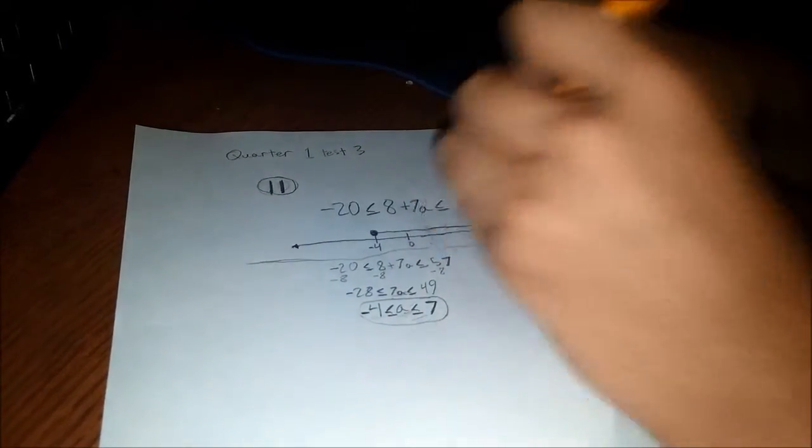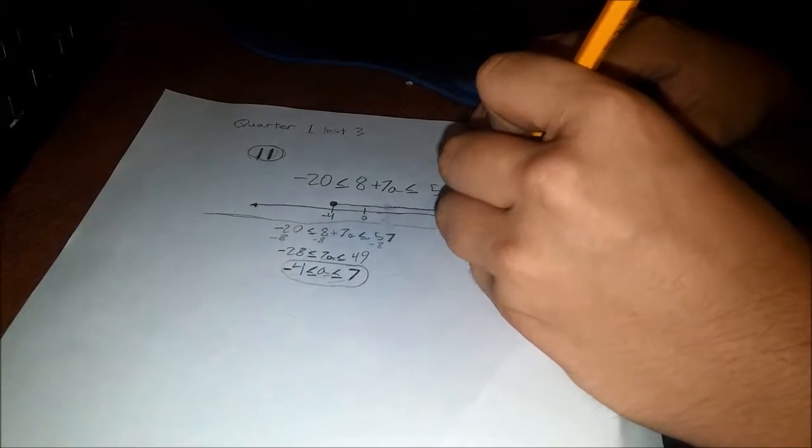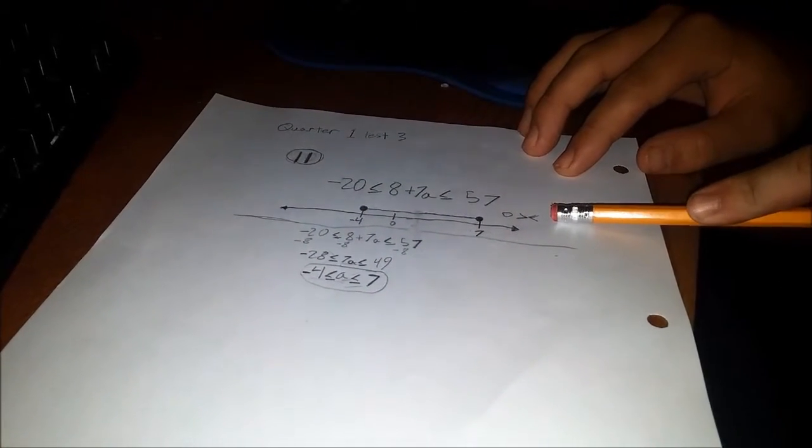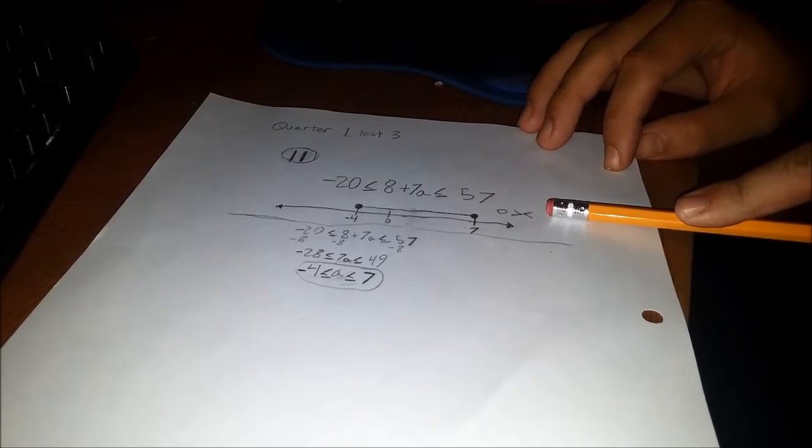Instead of being open dots like this, the sign would be something like this. It would be plain greater than or less than.